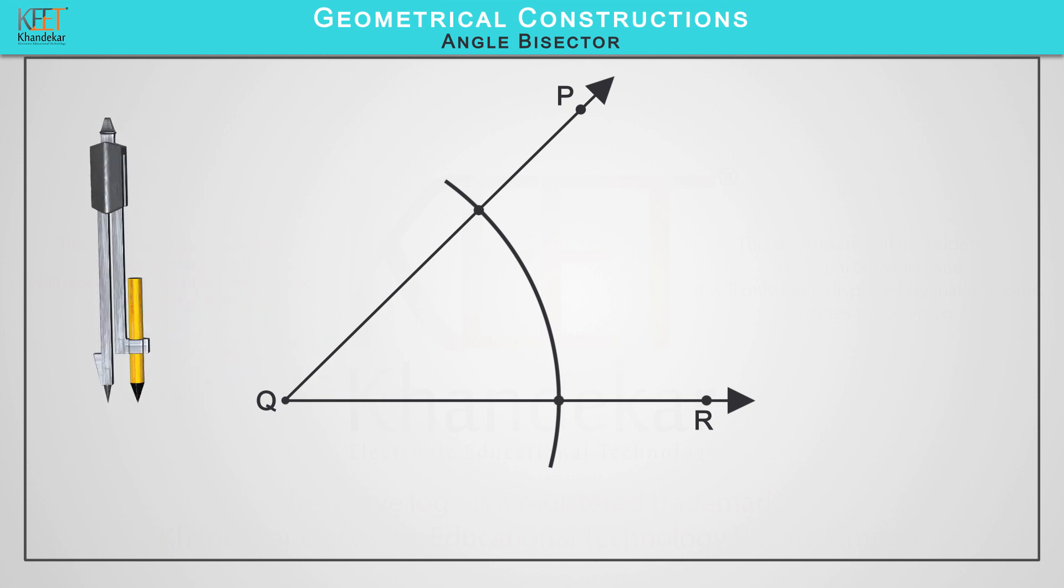Name the intersection of the arc and the sides as point A and point B.